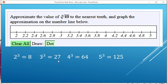49 lives between the 27 and the 64, so the value of its cube root is going to be between 3 and 4.